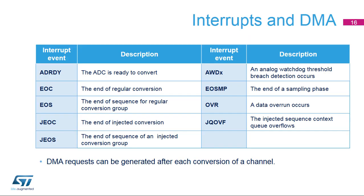The nine interrupt types are: ADC ready, end of conversion, end of sequence, end of injected conversion, end of injected sequence, analog watchdog, end of sampling, data overrun, and overflow of the injected sequence context queue.